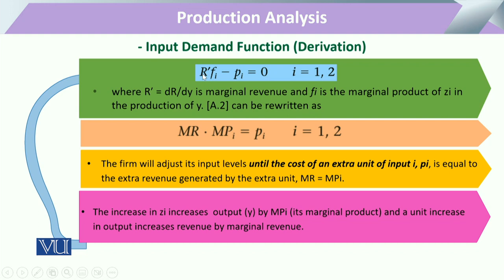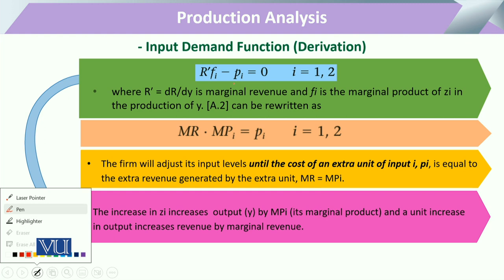In this equation, r' or r-dash represents marginal revenue, and fi represents the marginal product of input zi — that is, how that factor of production contributes to a change in output. This fi captures the respective change in output with the utilization of any given input.